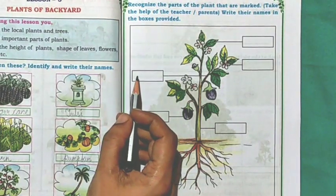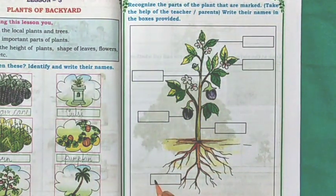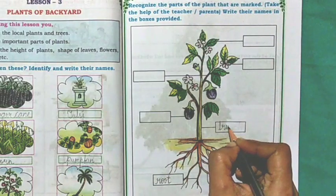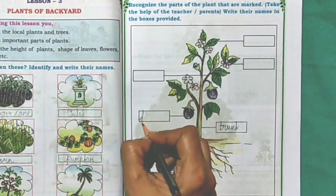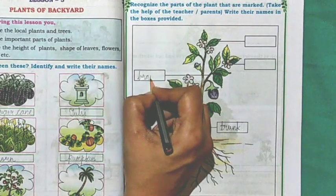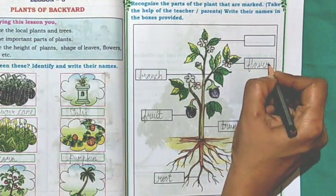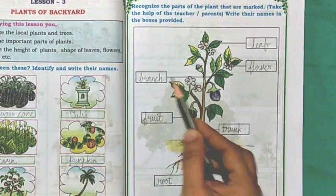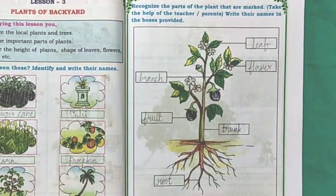Recognize the parts of the plant that are marked. Write their names in the boxes provided. Root, trunk, fruit, branch, flower, and leaf are the important parts of a plant.